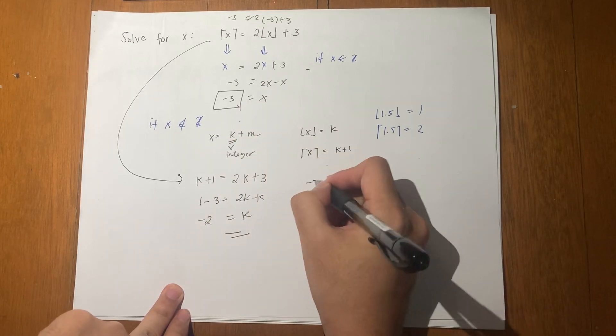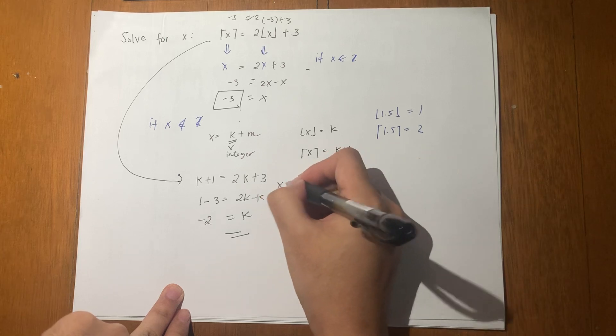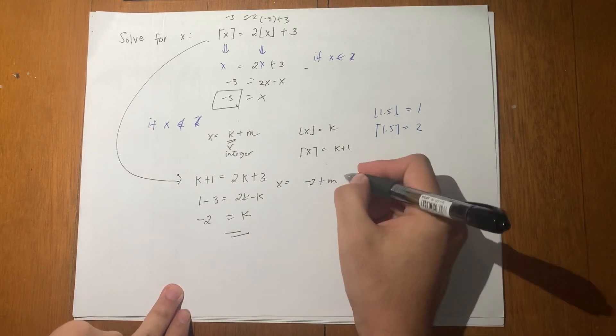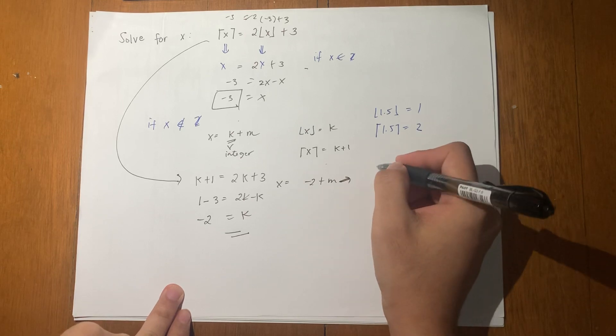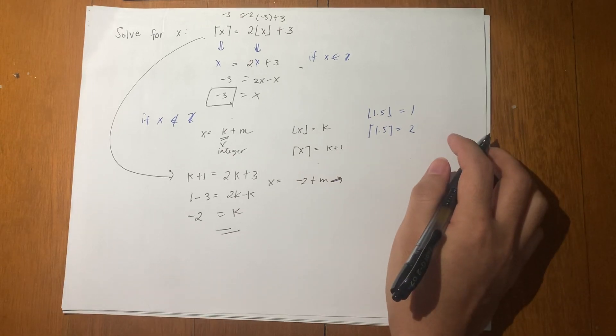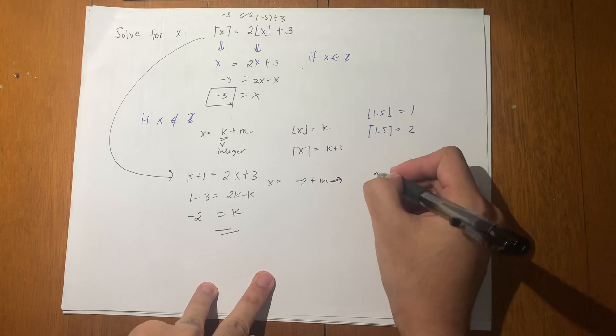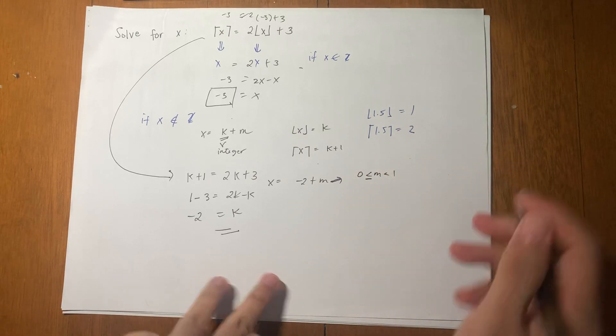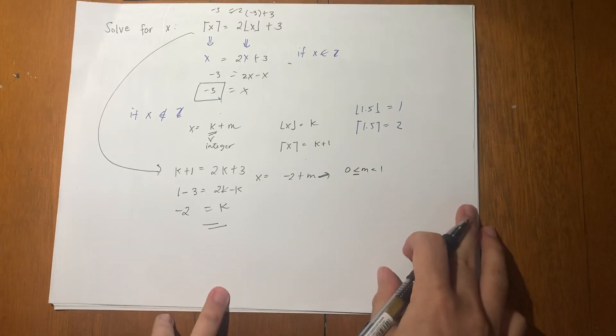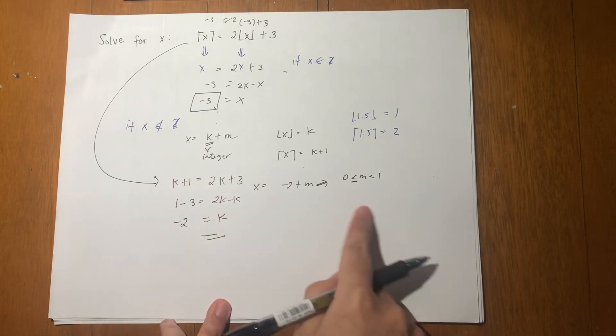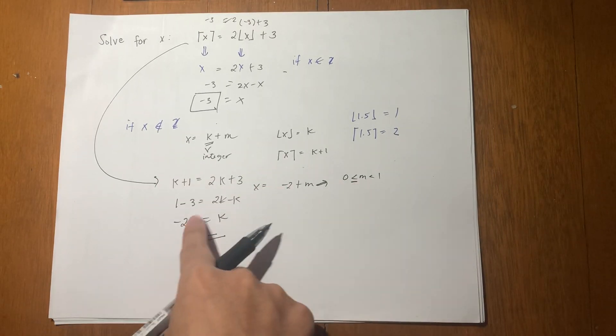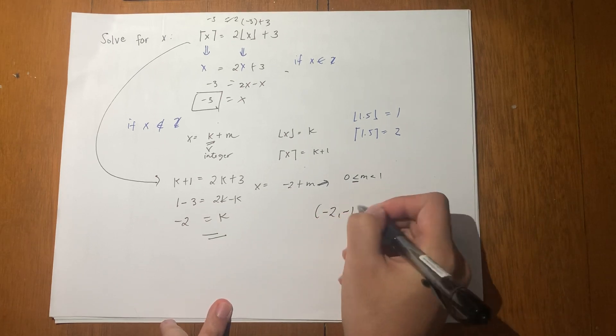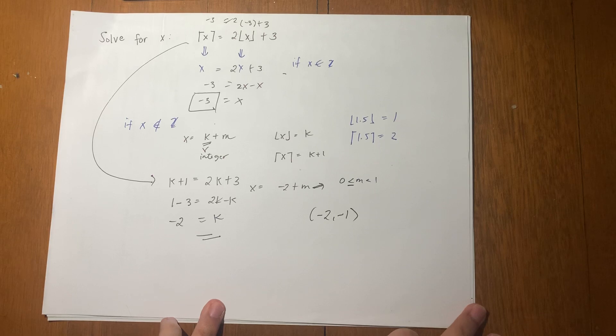K is negative 2, and then m is what's missing. So x equals negative 2 plus m. But m is any real number between 0 and 1. This means that x can range from negative 2 up to negative 1.